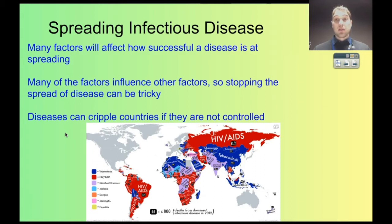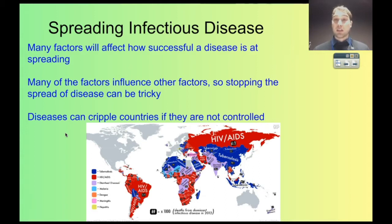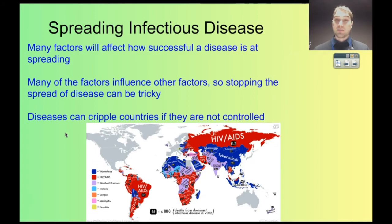This can happen locally, in small areas, in large areas, or in entire countries. And if a disease is spreading in a particularly bad way, it can cripple entire countries. So let's have a look at some of the factors.